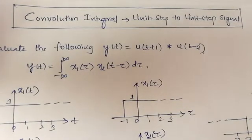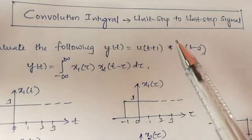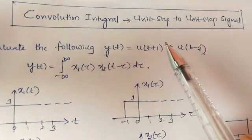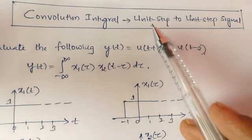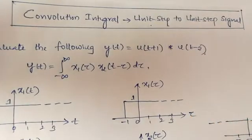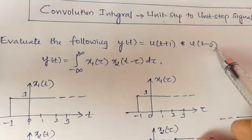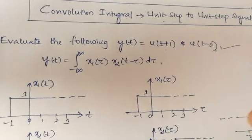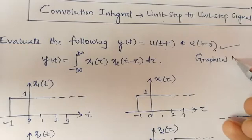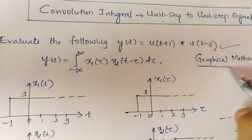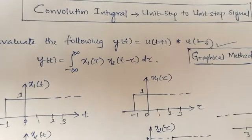In this video we will discuss the convolution integral for finding the convolution between given continuous time signals. If both signals are unit step signals, we need to evaluate y(t) = u(t+1) convolved with u(t-2). We have to solve this by the graphical method, sketching each and every step.